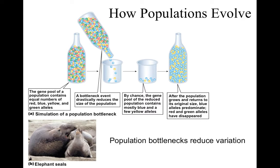A population bottleneck can be visualized as marbles in a bottle — if the original gene pool had red, green, blue, and yellow alleles, and only blue and yellow come out of the bottleneck by random chance, the red and green alleles are entirely eliminated. After the population recovers to its original size, only the blue and yellow alleles predominate — the red and green have disappeared entirely. That is essentially what happened to the elephant seal.